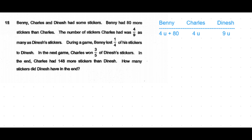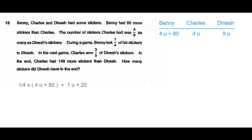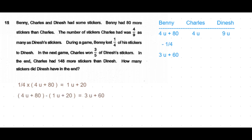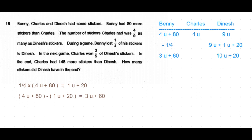One-fourth of (4 units + 80): one-fourth of 4 units is 1 unit, and one-fourth of 80 is 20. So Benny loses 1 unit and 20, leaving Benny with 3 units plus 60. What is lost is added to Dinesh, so Dinesh becomes 9 units + 1 unit = 10 units, plus 20.